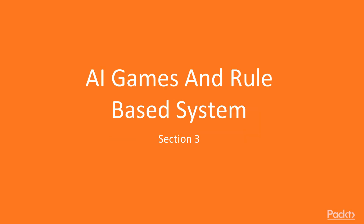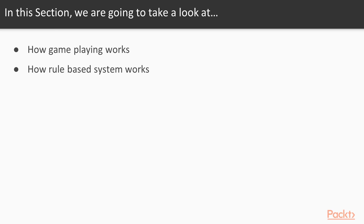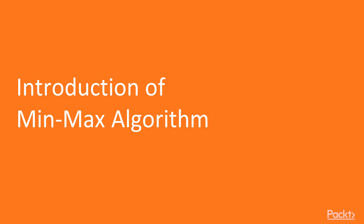Welcome to section 3 of game playing and rule-based systems. Here we'll see how AI game playing works, with a general introduction to game playing, how rule-based systems are implemented in the declarative programming language Prolog, and how to interface with Prolog in Java.